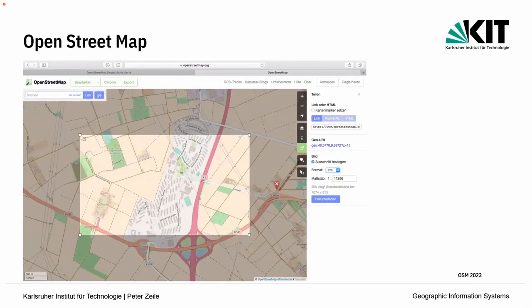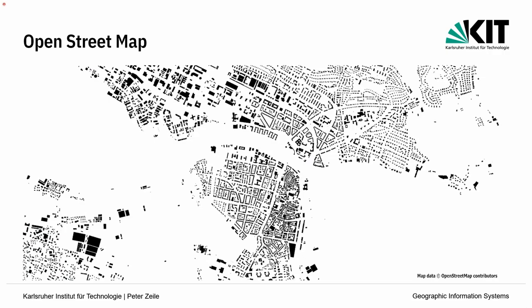OpenStreetMap ist eine sehr schöne Datenquelle. Man kann über die OpenStreetMap-Seite verschiedene Bereiche direkt als PDF oder SVG exportieren und damit in Bilddatenverarbeitungsprogrammen oder im UI-Design weiterarbeiten. Das Problem dabei: Die Geoinformationen gehen verloren – also Koordinaten. Auch Schwarzpläne kann man aus OpenStreetMap-Gebäudedaten gut generieren, ohne alles nachzeichnen zu müssen, wie wir das früher gemacht haben.